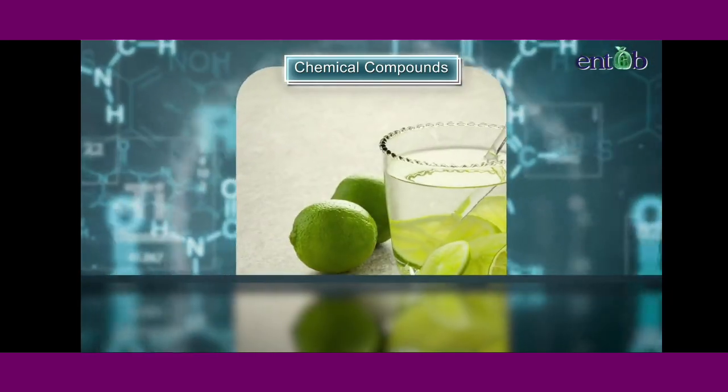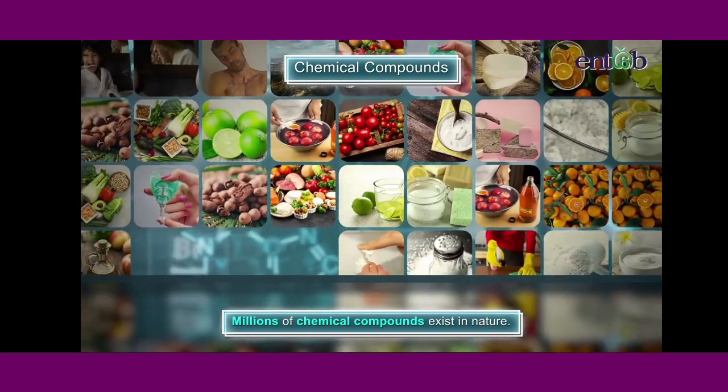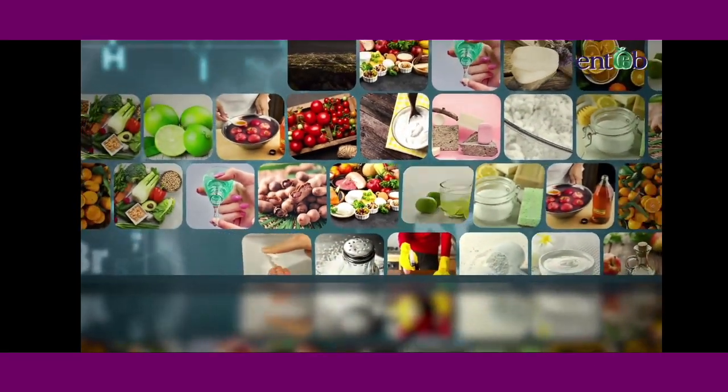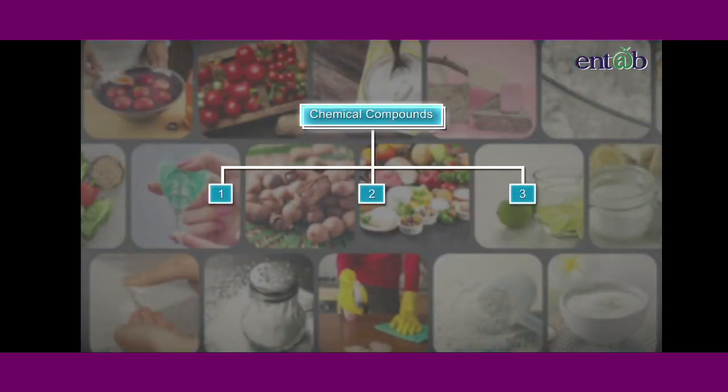We are surrounded by chemical compounds as millions of them exist in nature. Let's take forward this amazing journey of exploring more chemical compounds. Chemical compounds can be classified into three groups on the basis of their chemical behavior.